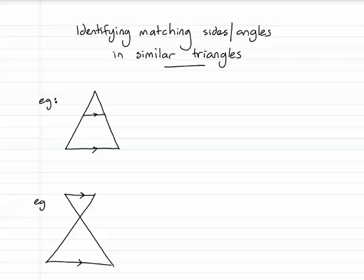Identifying matching sides and angles in similar triangles. It can be very difficult with some of the harder sets of triangles to identify matching sides and matching angles. Here are two of the sorts you most commonly see. It can help to redraw your two triangles as two separate triangles, like I've done here.